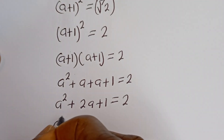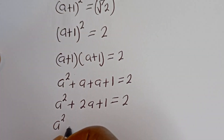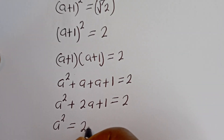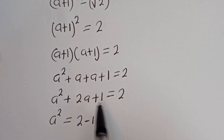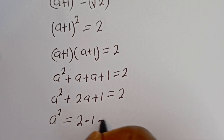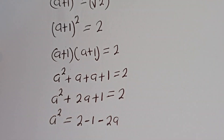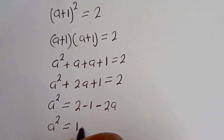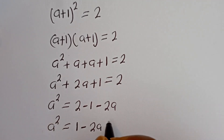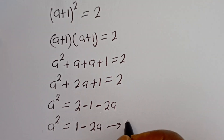Then a squared is equal to 2 minus 1, and taking 2a to the other side it becomes minus 2a. So a squared is equal to 1 minus 2a. Let's call this equation 2.